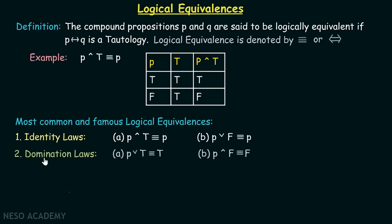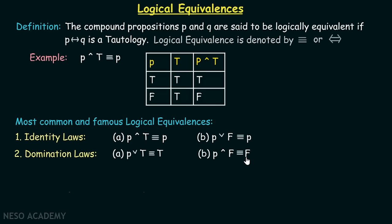The second one is domination laws. P OR True is equivalent to True — this is simple to understand: according to disjunction, if at least one proposition is true, the whole compound proposition will be true. P AND False is equivalent to False — according to the conjunction operator, if any one proposition is false, the whole compound proposition will be false.